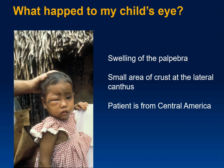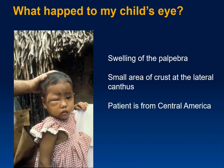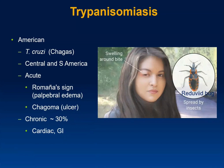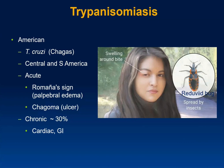What happened to this child's eye? The palpebrae are swollen, there's a small crust at the outer canthal area, and this child lives in Central America. Think of a Reduviid bug — also known as the kissing bug or assassin bug. After it feeds, it turns around and defecates in the area where it was feeding, depositing Trypanosoma cruzi in the process.